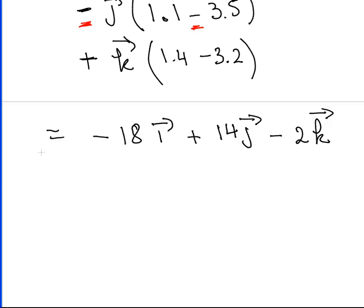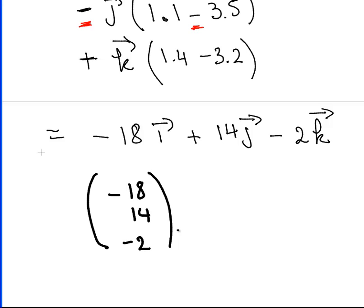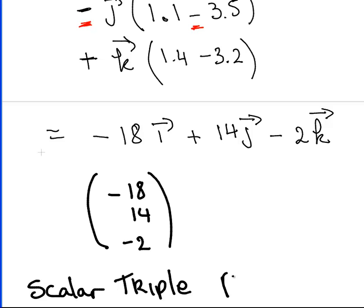So the final answer — the cross product — is −18i + 14j − 2k, which is indeed a vector. We can also write this in column vector notation as (−18, 14, −2). Something that may be of interest and will be useful later is the scalar triple product, which follows on from the cross product. The cross product is a very useful building block when working with vectors.